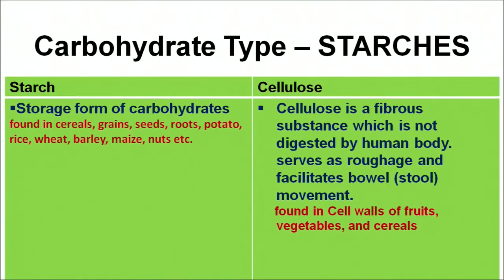Now let us move to the carbohydrate type: starches. There are two categories — starch and cellulose. Starch is the storage form of carbohydrate, found in food items like cereals, rice, and potato. Cellulose is a fibrous substance not digested by the body, but it serves as roughage which helps in bowel movements and the excretion process. It is found in the cell walls of fruits, vegetables and cereals.